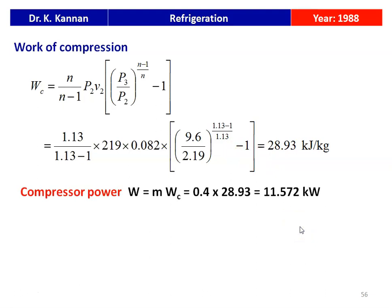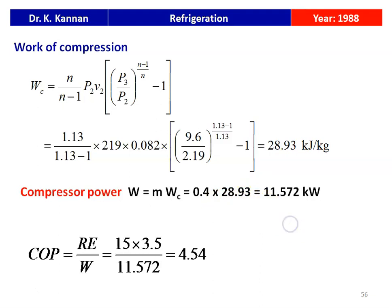The compressor power equals compressor work done multiplied by mass flow rate: 0.4 × 28.93 = 11.572 kW. The COP of the cycle equals refrigeration effect divided by work done: (15 × 3.5) / 11.572 = 4.54. So, the compressor power is 11.572 kW and COP = 4.54.